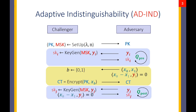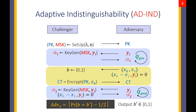In the post-challenge phase, the adversary is allowed to make more key queries under the same constraint that he should not be able to trivially win the game. We say that the scheme is adaptively indistinguishable secure if the advantage of any efficient adversary is negligible.